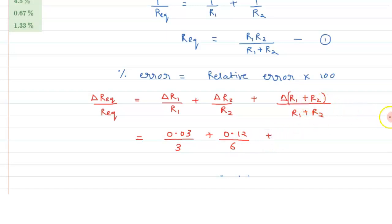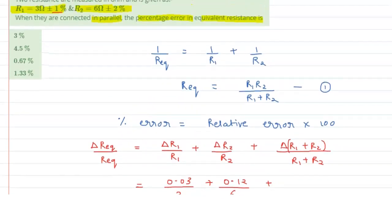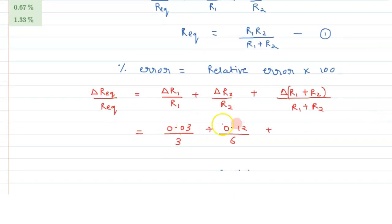Plus, the errors will get added up, that is we can say 0.03 plus 0.12 and dividing it by R1 plus R2, that is 9.